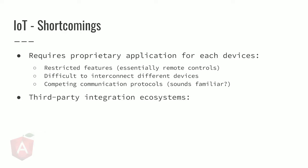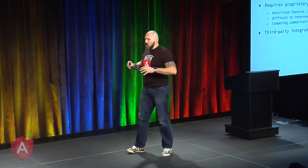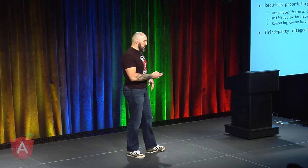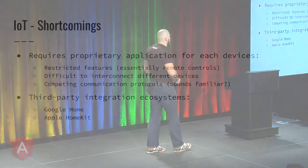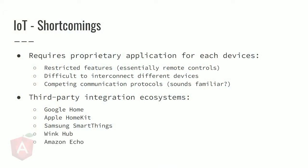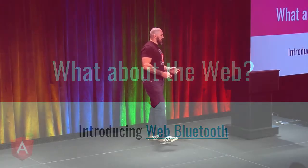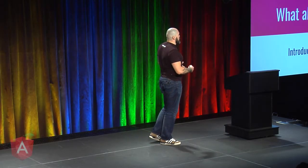To answer those shortcomings, companies like Google, Amazon, and others have been implementing a whole ecosystem and providing access for these devices to connect to one another using their platform. So you have Google Home, Apple HomeKit, Samsung SmartThings, WinkHub, and Amazon Echo as the main ones. But what about the web? We're going to look into the capabilities that are coming with your browser — not every browser, actually, and we'll look into that.